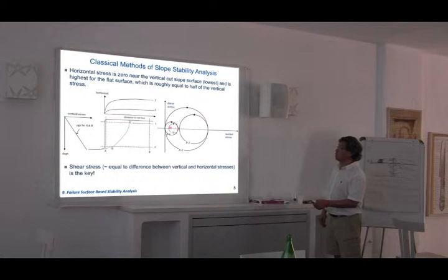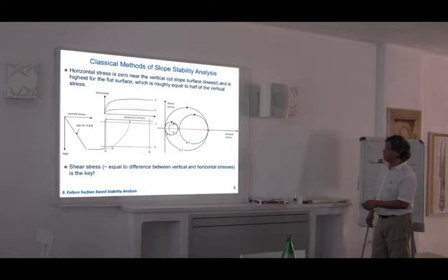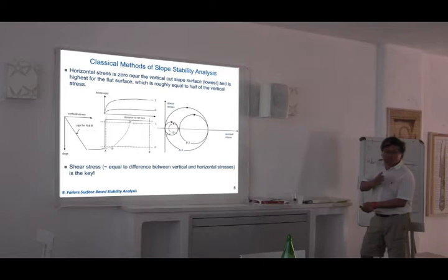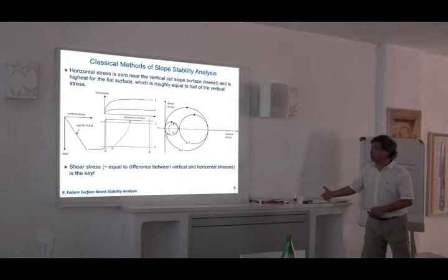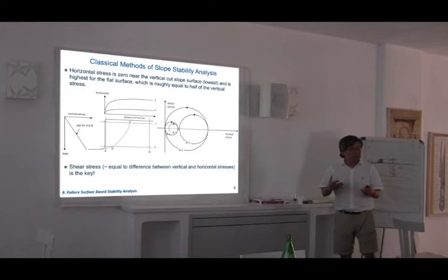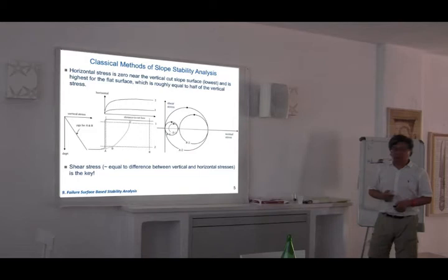Looking at all four Mohr circles: which state of stress has the highest shear stress? It's at the toe, because the shear stress is the radius of the Mohr circle — the maximum shear stress is largest for that state. The shear stress at the toe is the highest and most vulnerable. That's why in natural slopes you don't see very sharp corners — because that corner has very high shear stress and has already failed, giving a smoother shape.